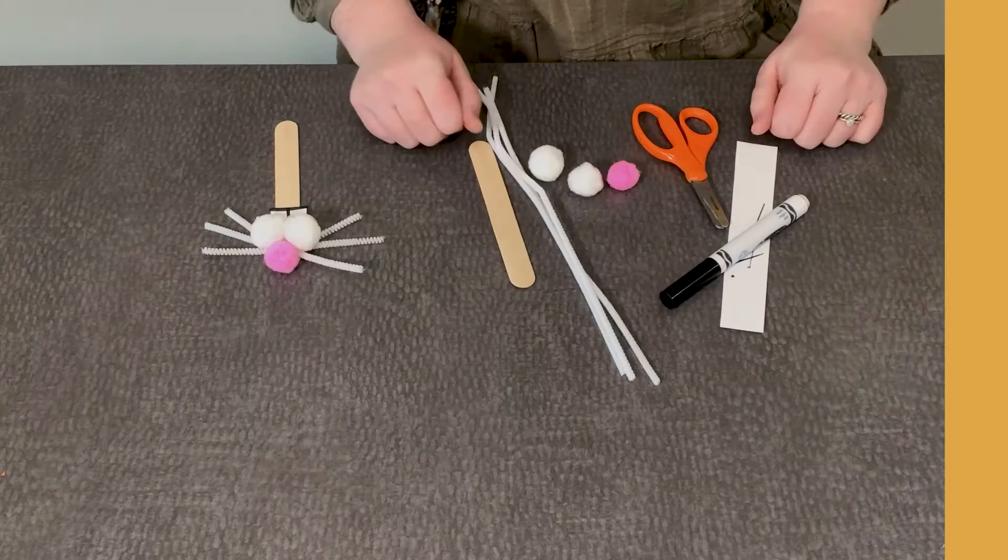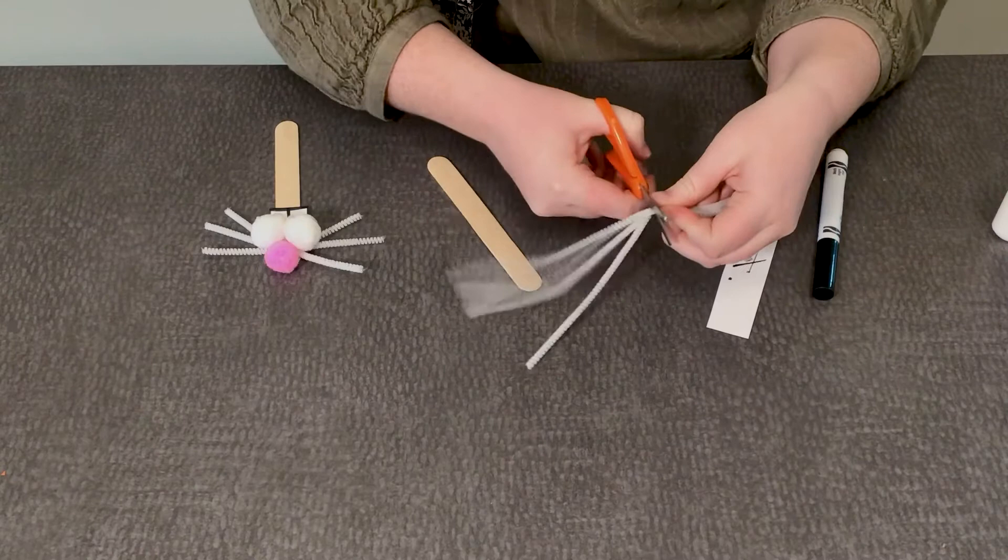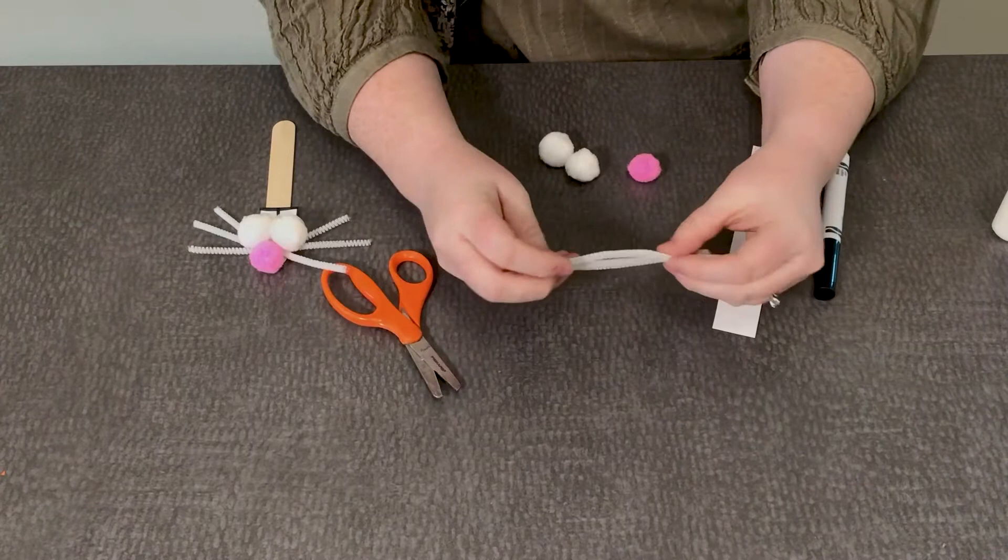So to get started we're going to need to cut down our chenille stems. These are too long for our bunny whiskers so we're going to cut them down a little bit. I'd say just cut them in half and we'll put those other three aside.